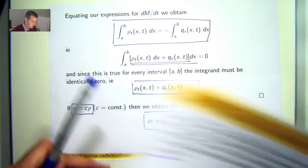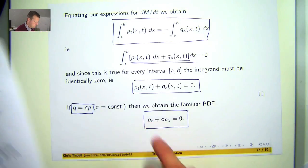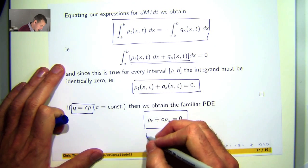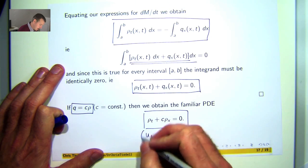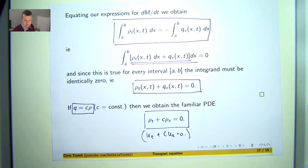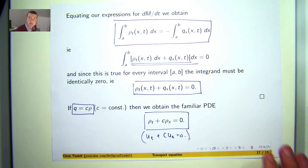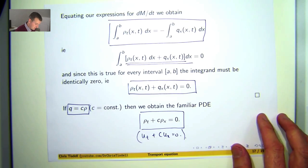So I think I wrote it in terms of u at the start. Well, here I've got it in terms of rho. So it's the same equation. So there it is. There's a derivation of the transport equation.